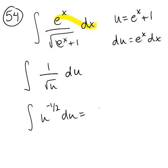If you add 1 to the exponent and put it over it, it's going to be 2 u to the 1 half plus c, which is equal to 2 square roots of e to the x plus 1 plus c.